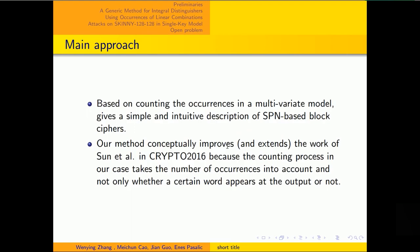Our approach based on counting the occurrences in a multivariate model gives a simple and intuitive description of SPN block ciphers. Our method improves the work of Sunbin in Crypto 2016 because the counting process in our case takes the number of occurrences into account and not only whether a certain word appears at the output or not.